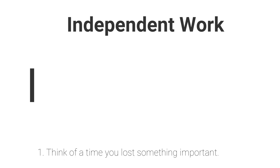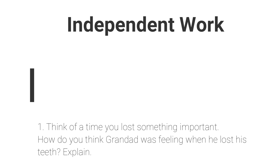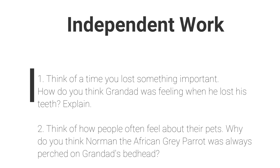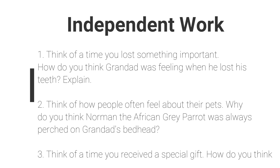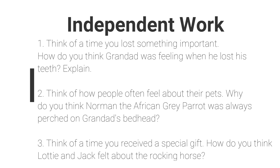Now it's time for your independent work. Remember, we're focusing on making connections, so the three questions you'll be answering today all require you to make a connection to help explain your answer. Number one: think of a time you lost something important — how do you think granddad was feeling when he lost his teeth? Explain. Number two: think of how people often feel about their pets — why do you think Norman the African gray parrot was always perched on granddad's bedhead? Number three: think of a time you received a special gift — how do you think Lottie and Jack felt about the rocking horse? Notice that for all of these questions you're being prompted to think about something first, then asked the question.